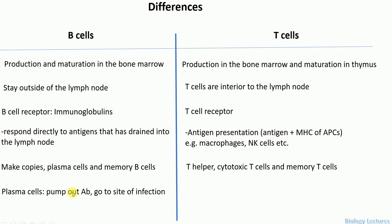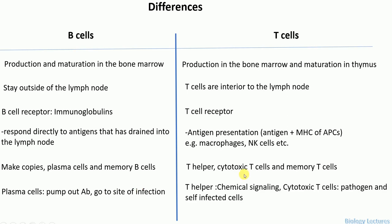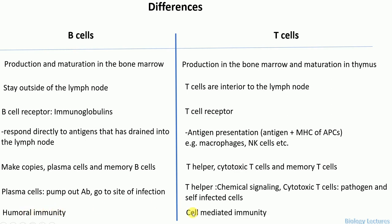The plasma cell pumps out antibodies, and these antibodies go to the site of infection and confer humoral immunity. T helper cells are involved in chemical signaling — they produce cytokines and chemokines to stimulate B cells and other T cells. Cytotoxic T cells kill both pathogen-infected and self-infected cells, conferring cell-mediated immunity. So B cells confer humoral immunity whereas T cells confer cell-mediated immunity.